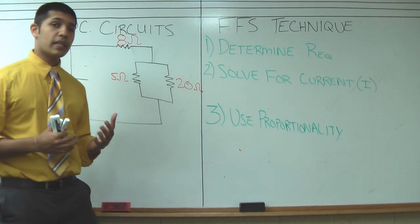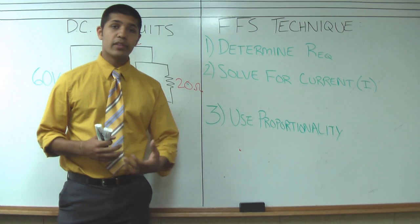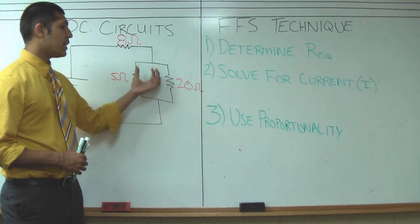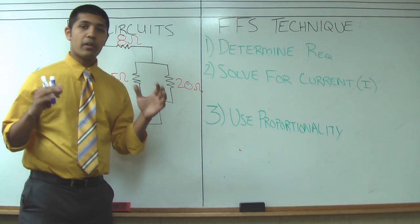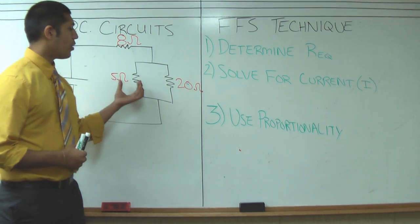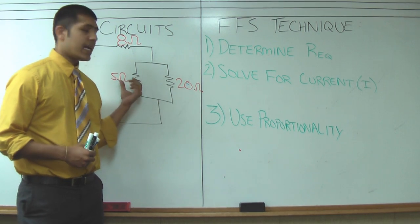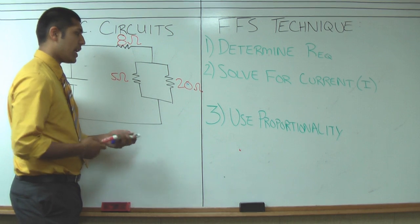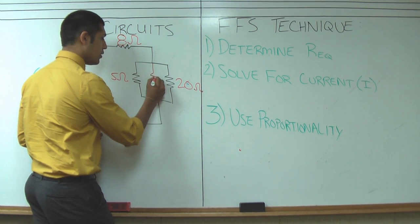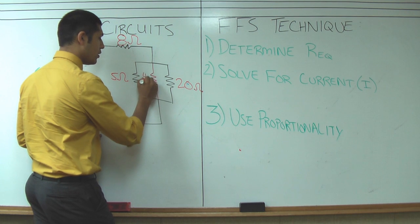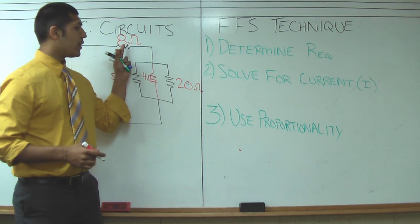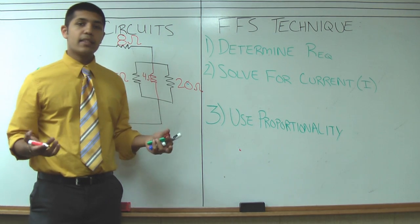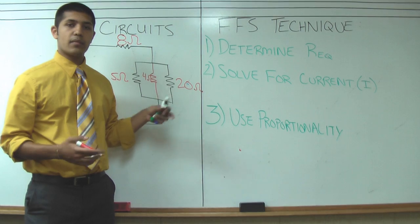The first step that you have to do is you have to solve for the equivalent resistance. So the equivalent resistance is determined by combining all of these resistors as if they were only one. So first we're going to do the parallel. A 5 ohm and a 20 ohm resistor actually combined to a 4 ohm resistor. And then there's an 8 ohm resistor and what appears to be a 4 ohm resistor in series. That's going to give us a 12 ohm resistor. We just add them up.